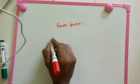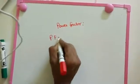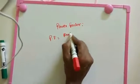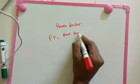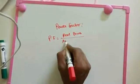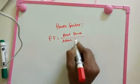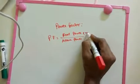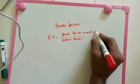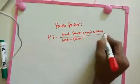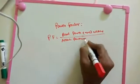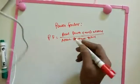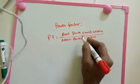Power factor is the ratio between real power and apparent power. Real power has another name — true power or utilized power. Apparent power also has another name — total power. Some people mention other names as well.